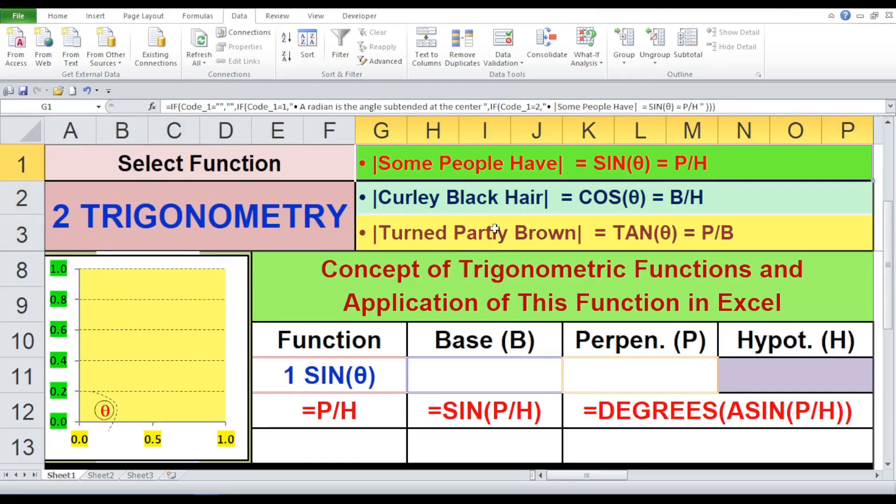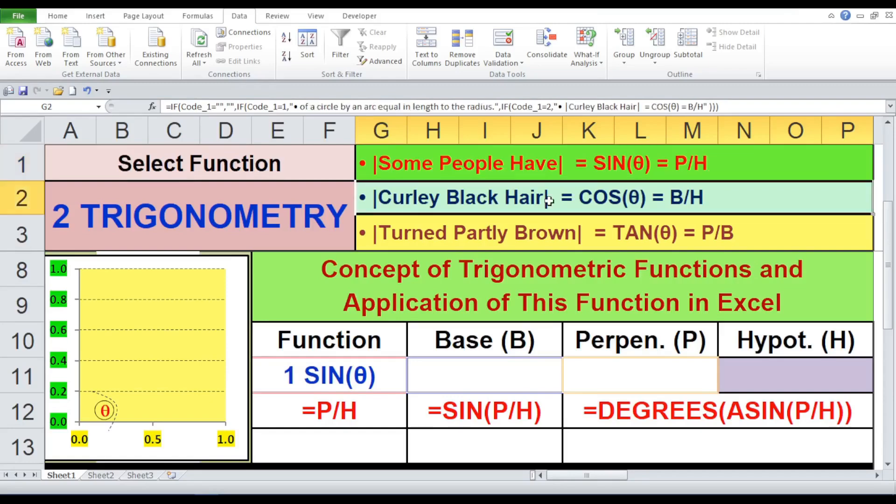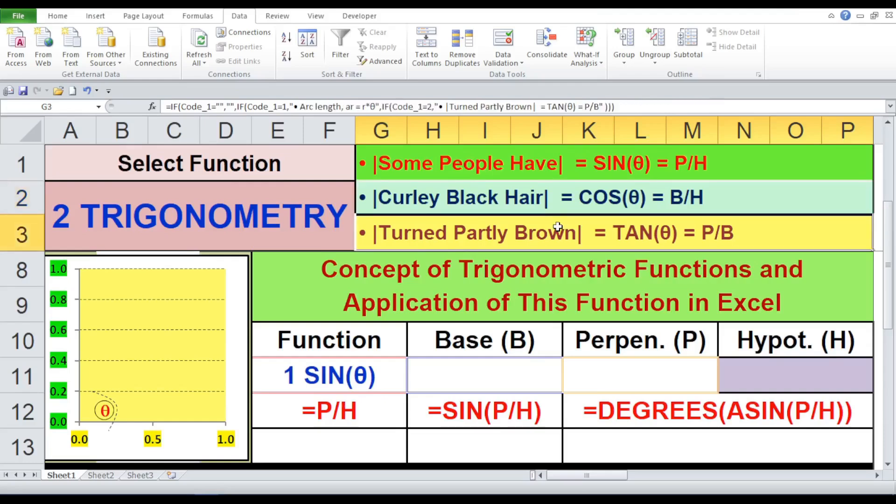Let's dive deeper into trigonometry. To refresh our memory, remember this mnemonic: Some people have, Curly black hair, Turned partly brown. This helps us recall the definitions of sine, cosine, and tangent. In first part, some people have: Some stands for sine, People stands for perpendicular, Have stands for hypotenuse. Therefore sine equals perpendicular by hypotenuse.